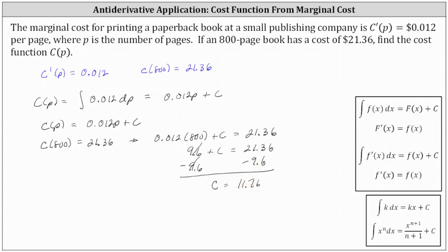This means the cost function C(P) is equal to 0.012P + 11.76.